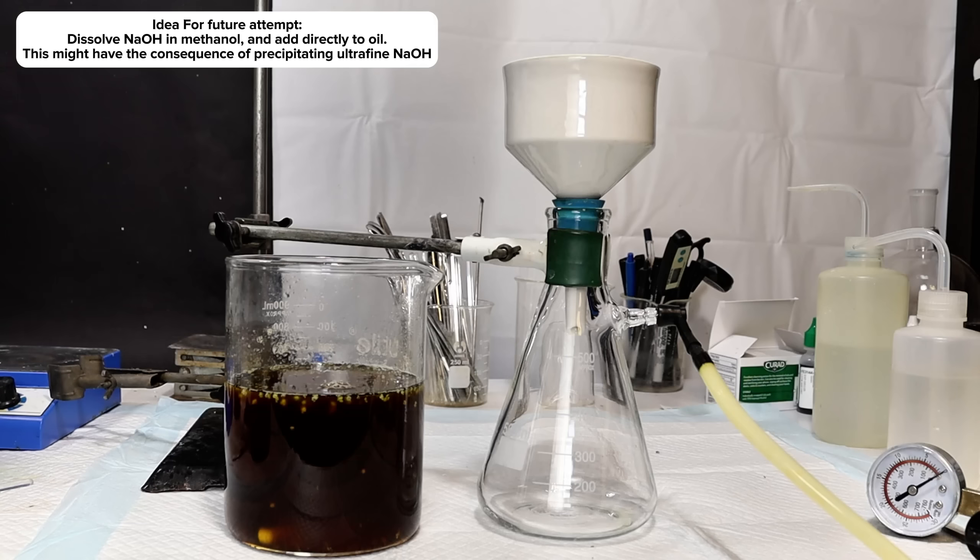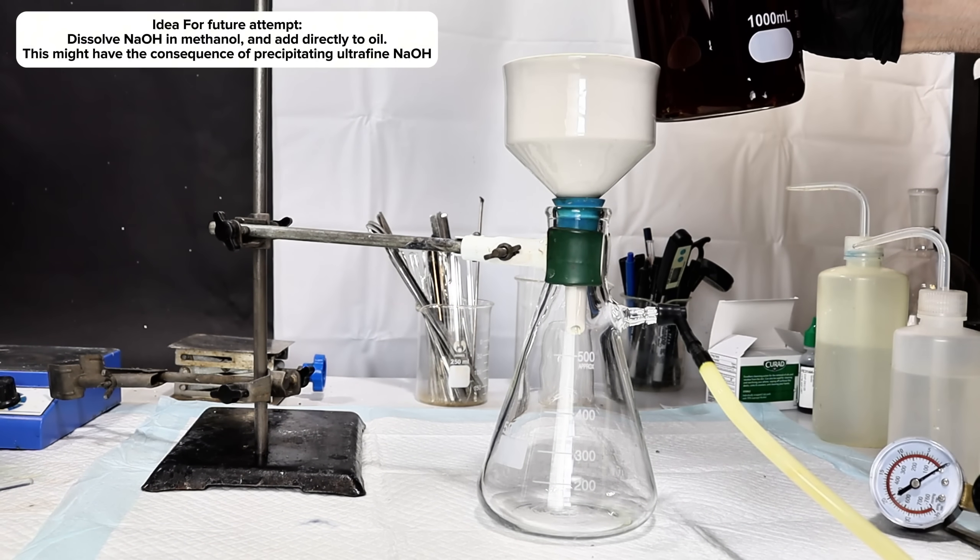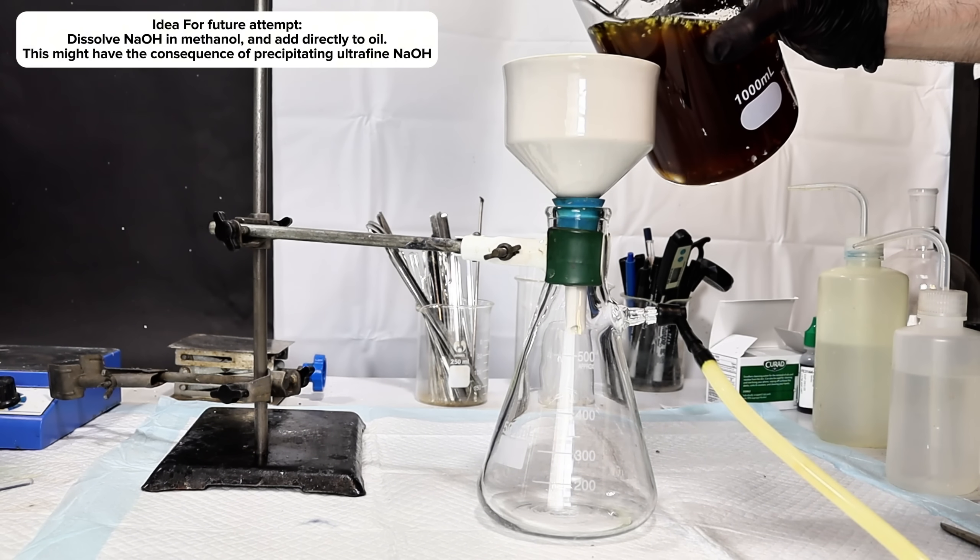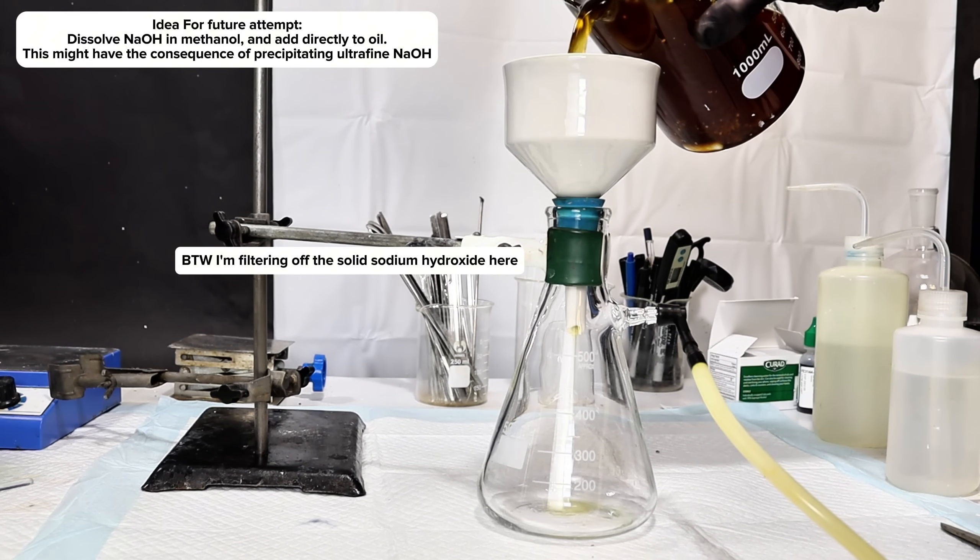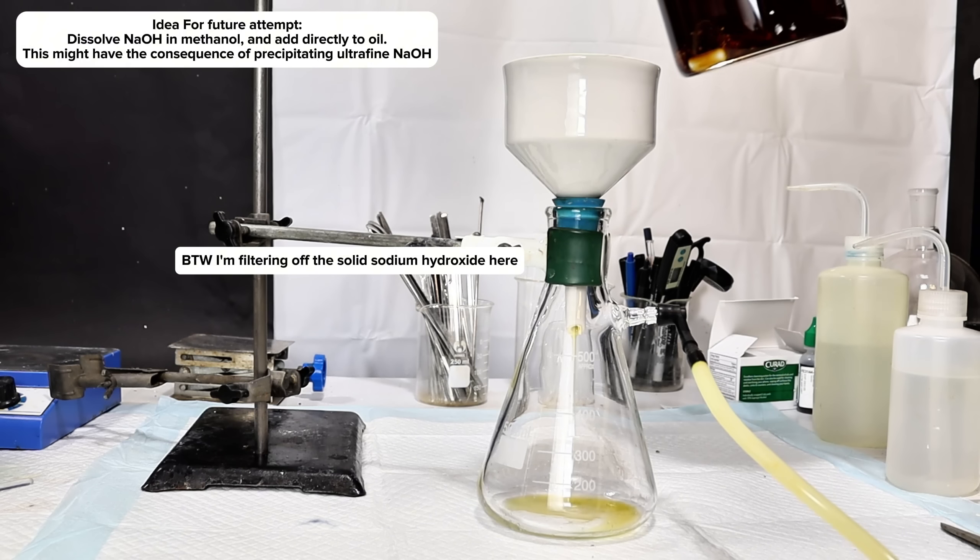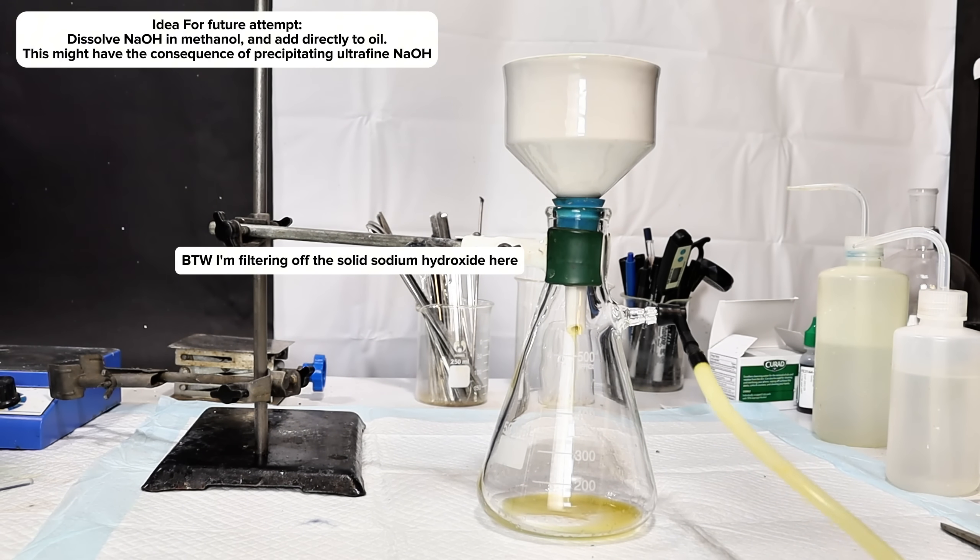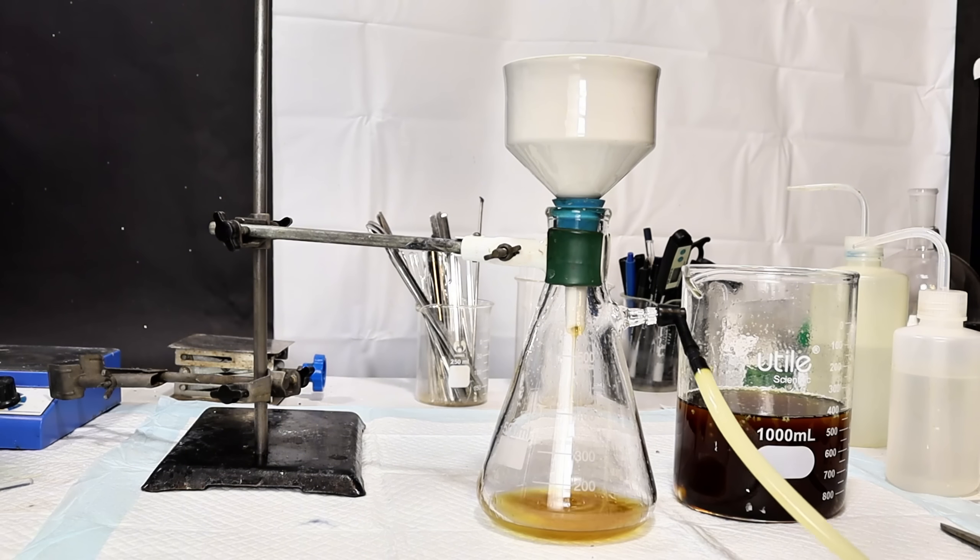That is, instead of directly adding granulated sodium hydroxide, I might try dissolving the sodium hydroxide in the methanol first using a bit of heat, and then add that to the oil. I feel like doing it this way would help the reaction go to completion a lot faster, but it might result in an ultrafine precipitate of sodium hydroxide, which could be more difficult to remove than the granules.